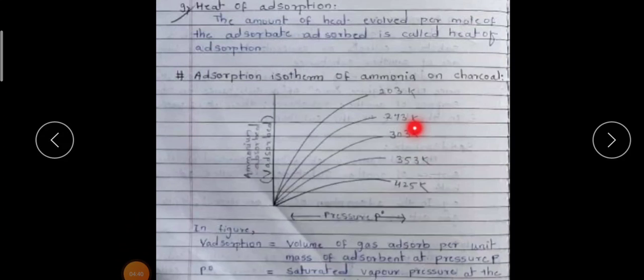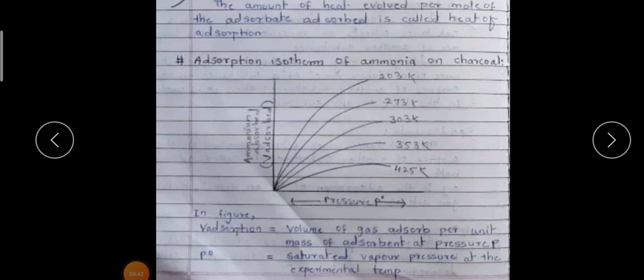Now we will move towards the adsorption isotherm. For ammonia on charcoal, we can see adsorption at different temperatures. In the figure, the volume of gas adsorbed per unit mass of adsorbent is plotted against pressure P. Here P/P₀, where P₀ is the saturated vapor pressure at the experimental temperature — that is, the pressure required to condense the gas to a liquid.